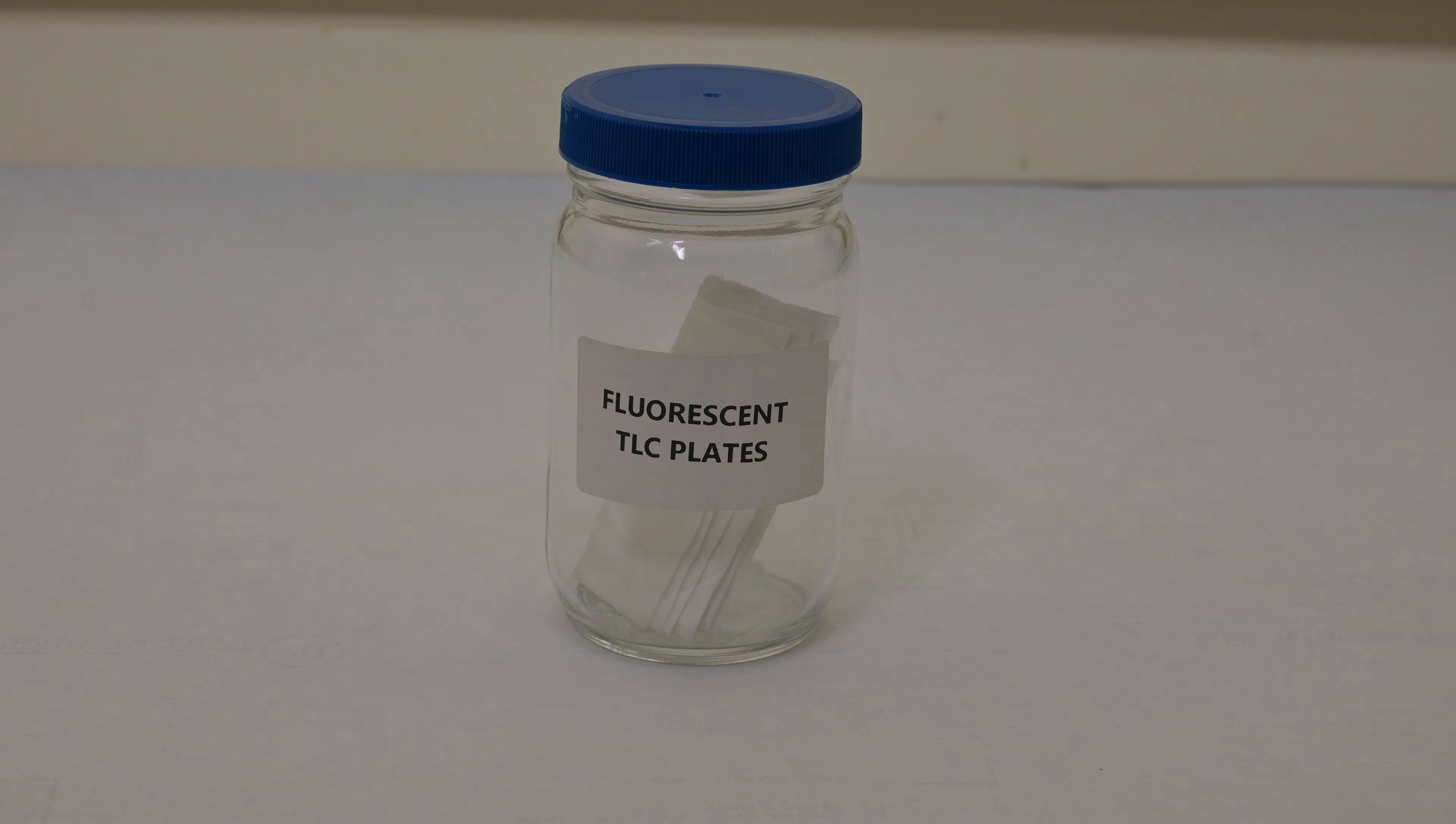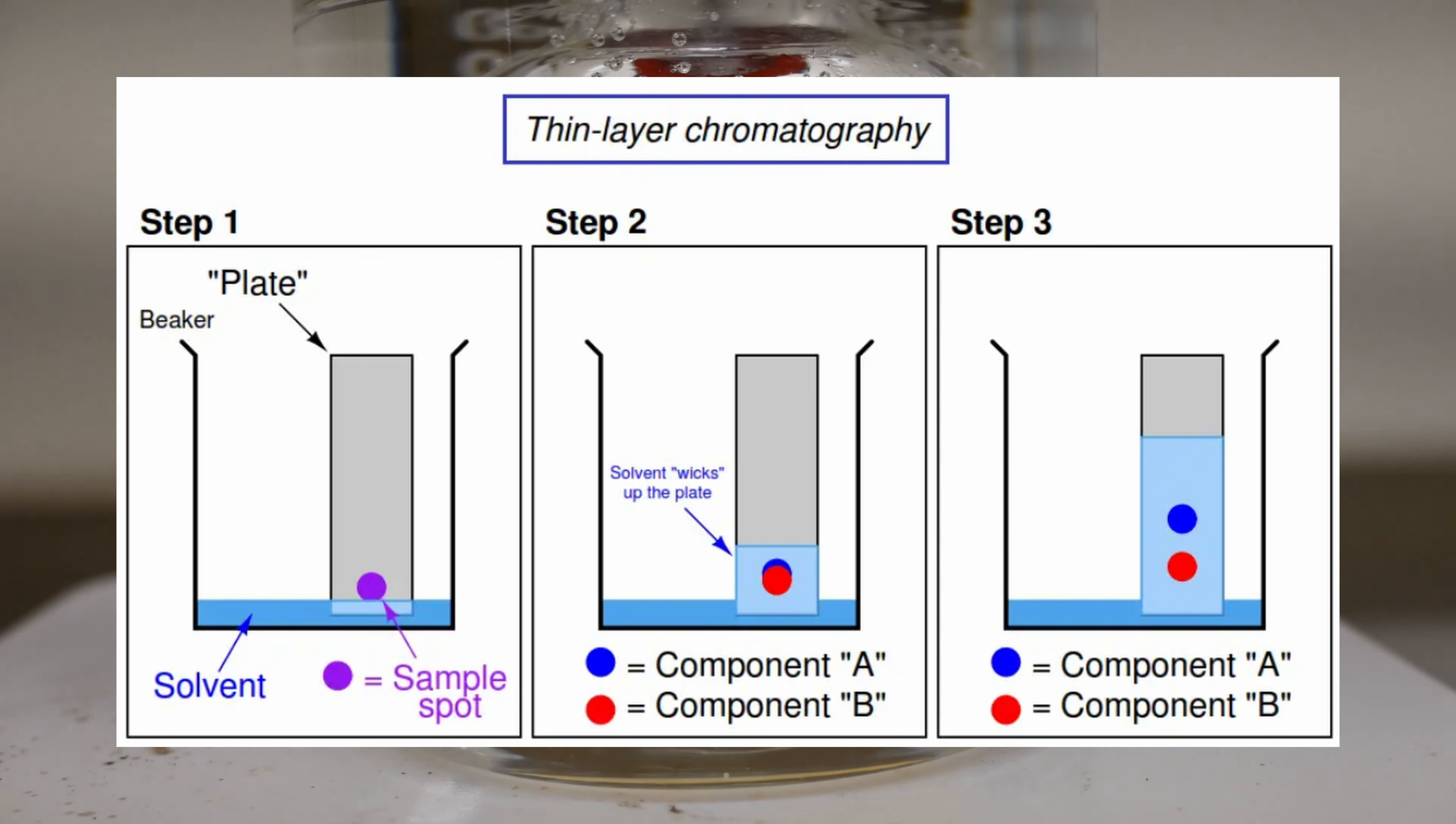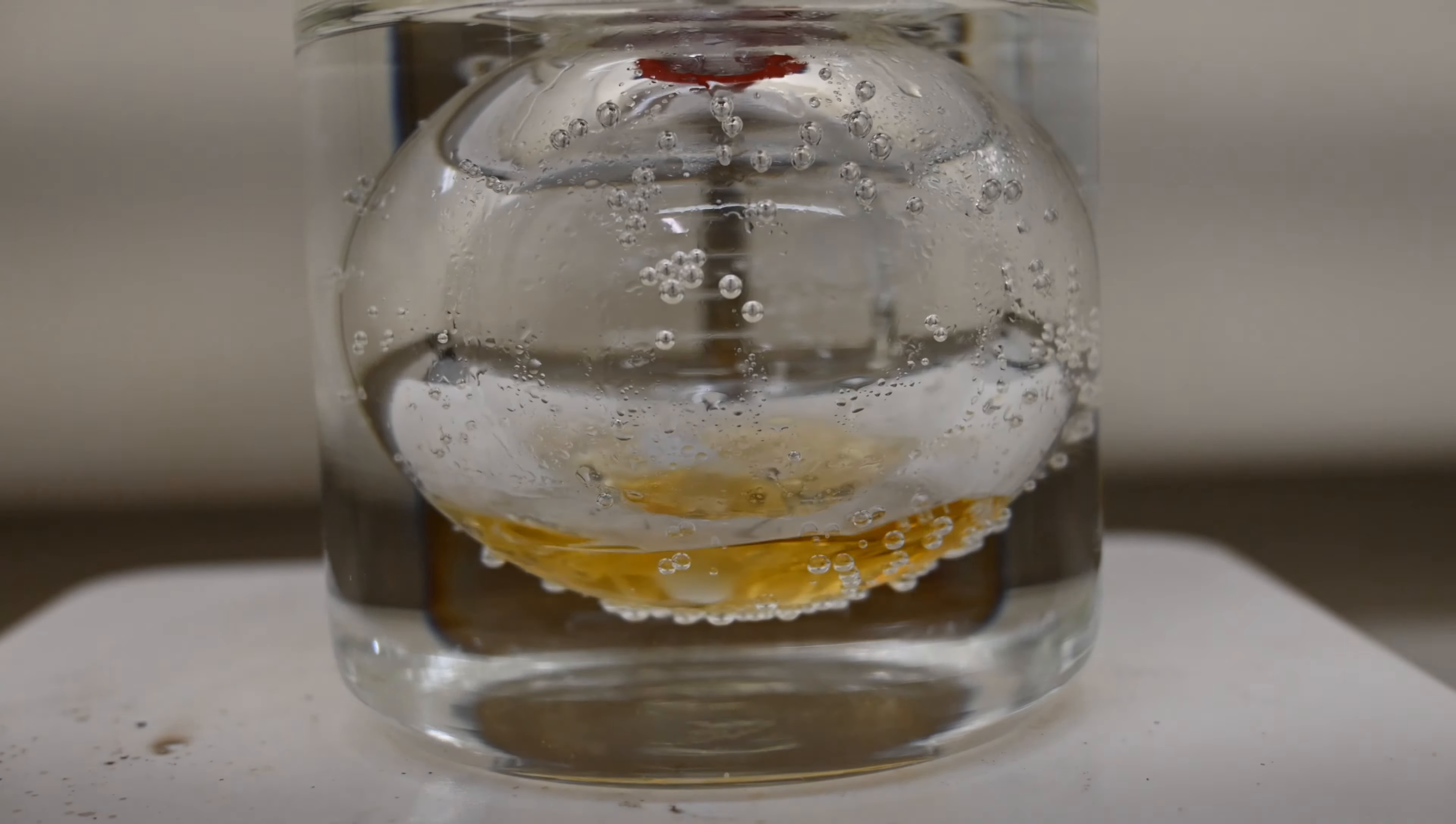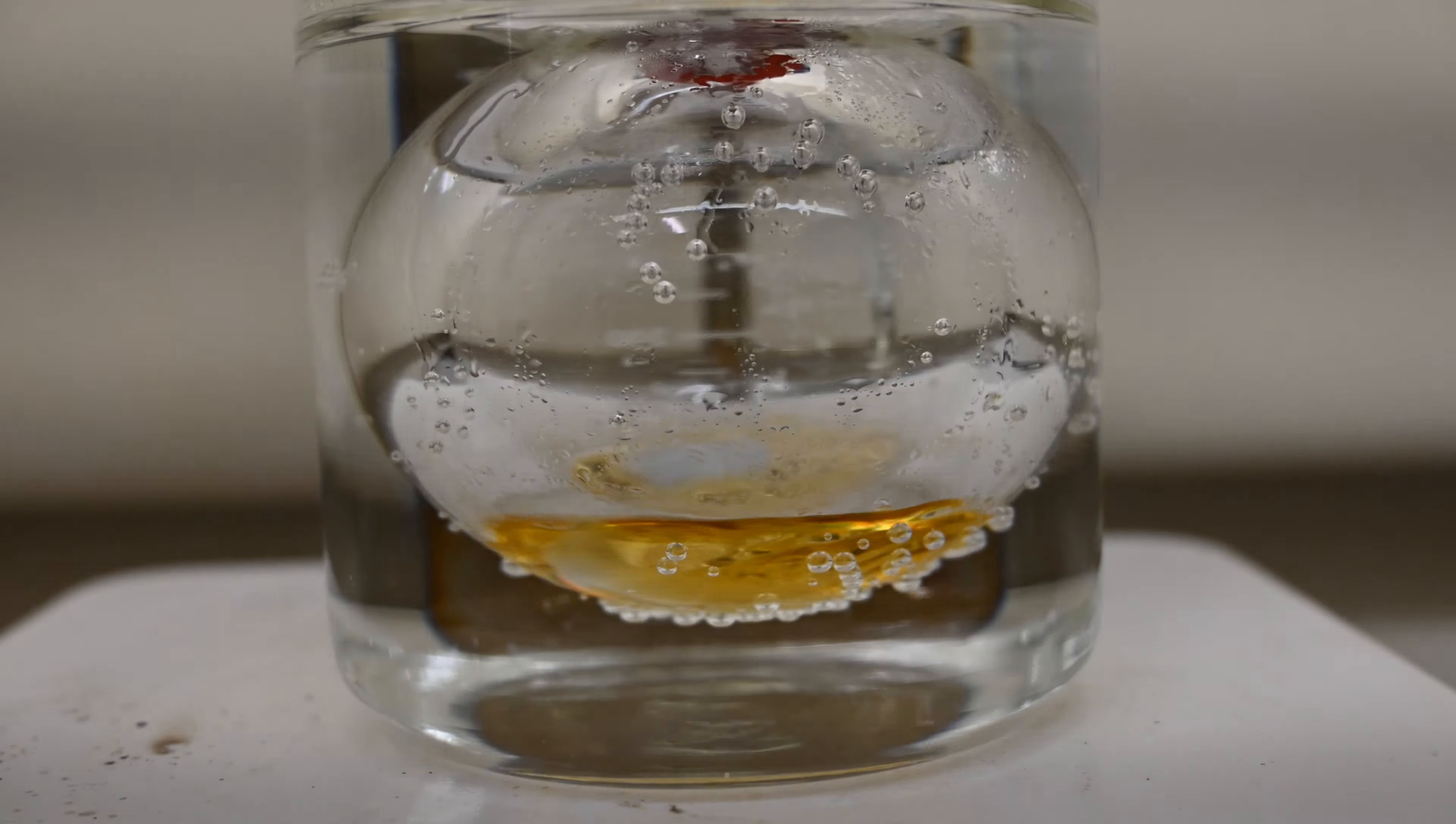To make sure the reaction is complete, I perform TLC, thin layer chromatography, which is a widely used technique in organic chemistry for monitoring the progression of reactions and ensuring that the reactions have fully reacted and converted to products. In the context of our reaction, converting M-toluic acid to M-toluoyl chloride using thionyl chloride, TLC can verify that all the M-toluic acid has reacted.